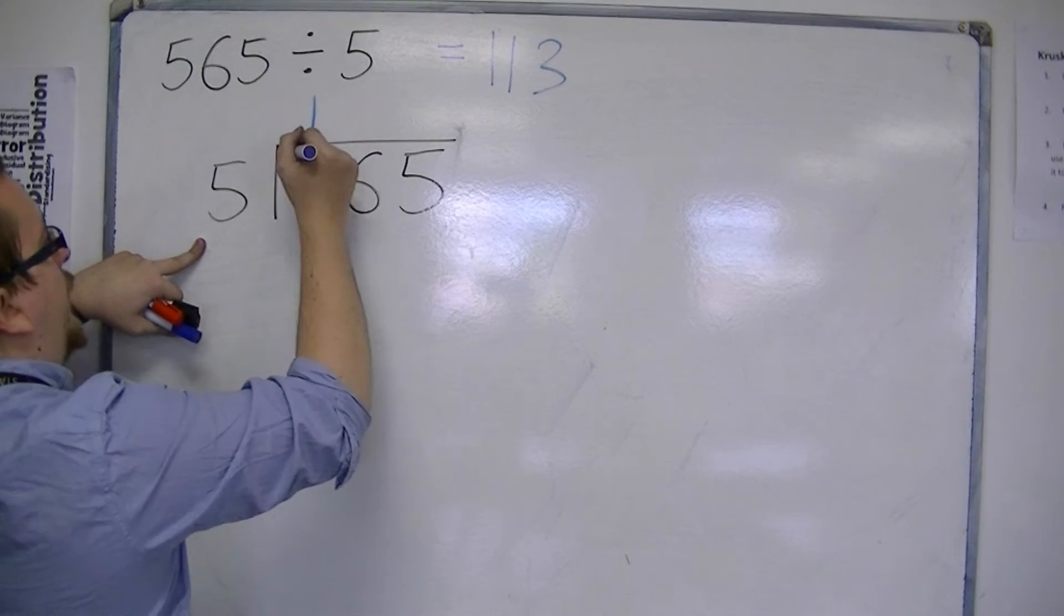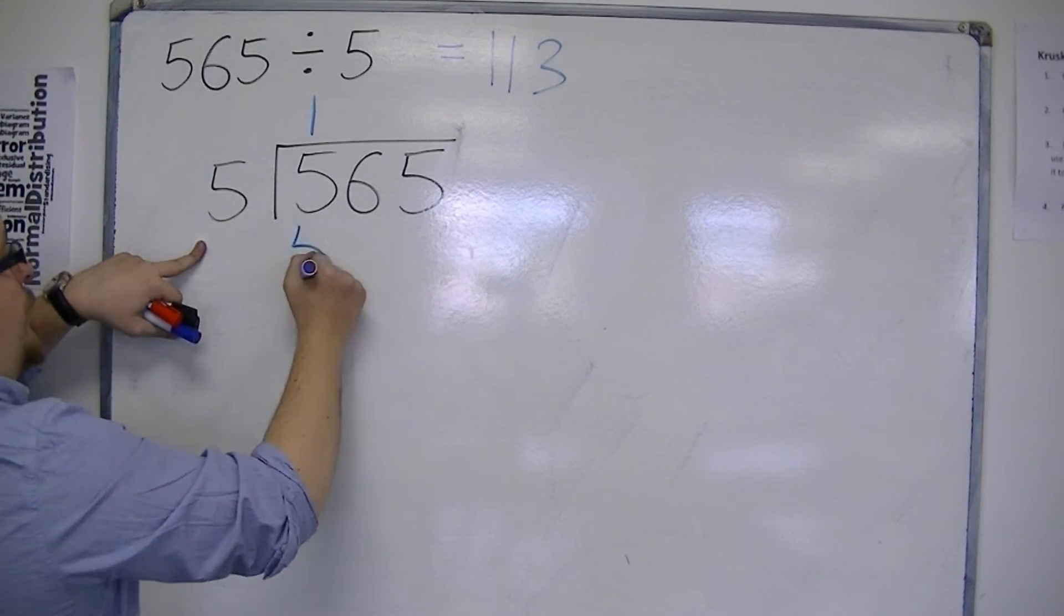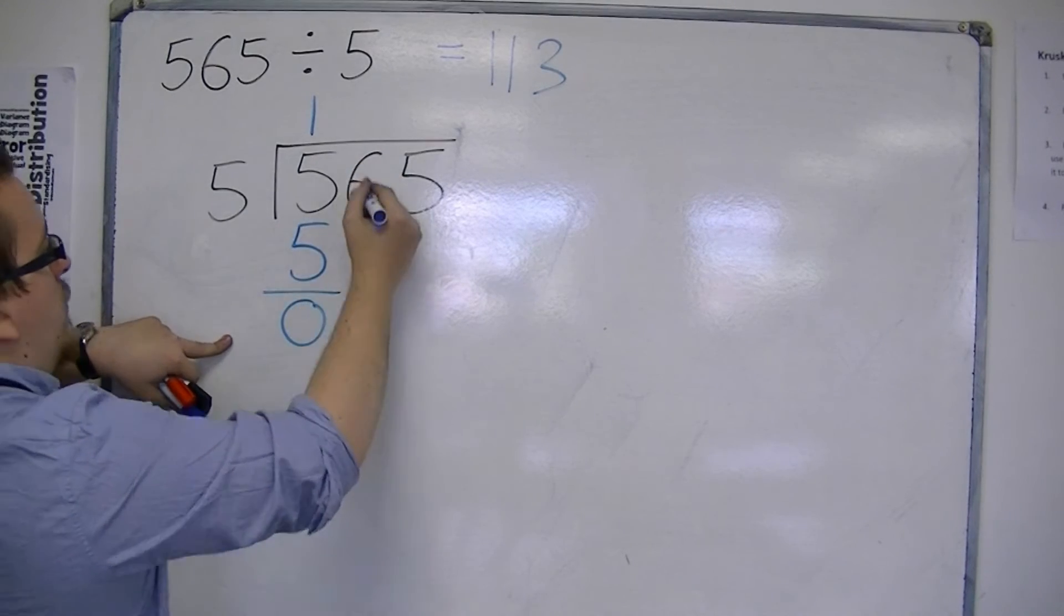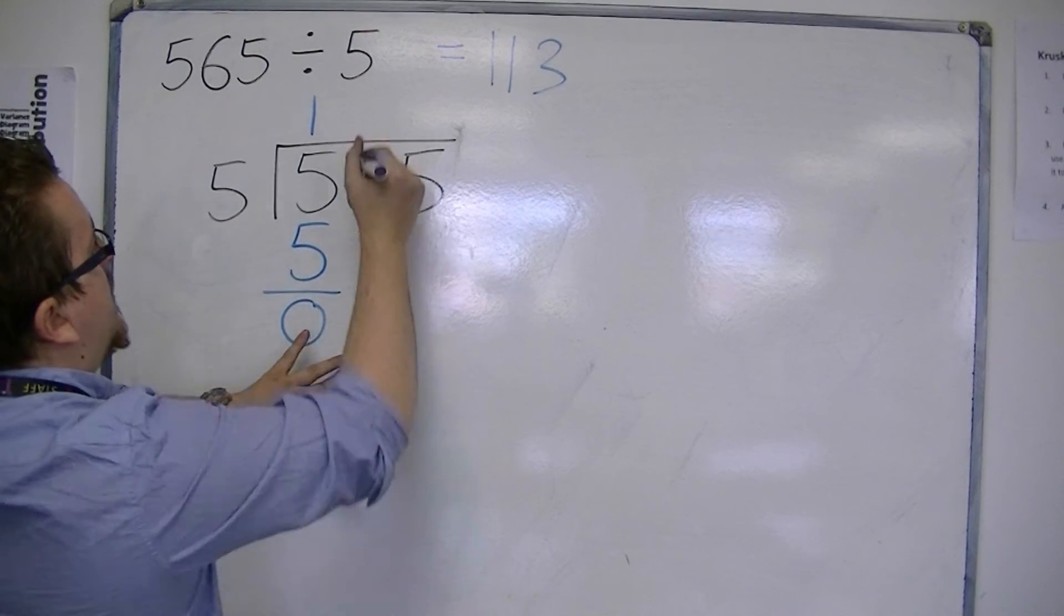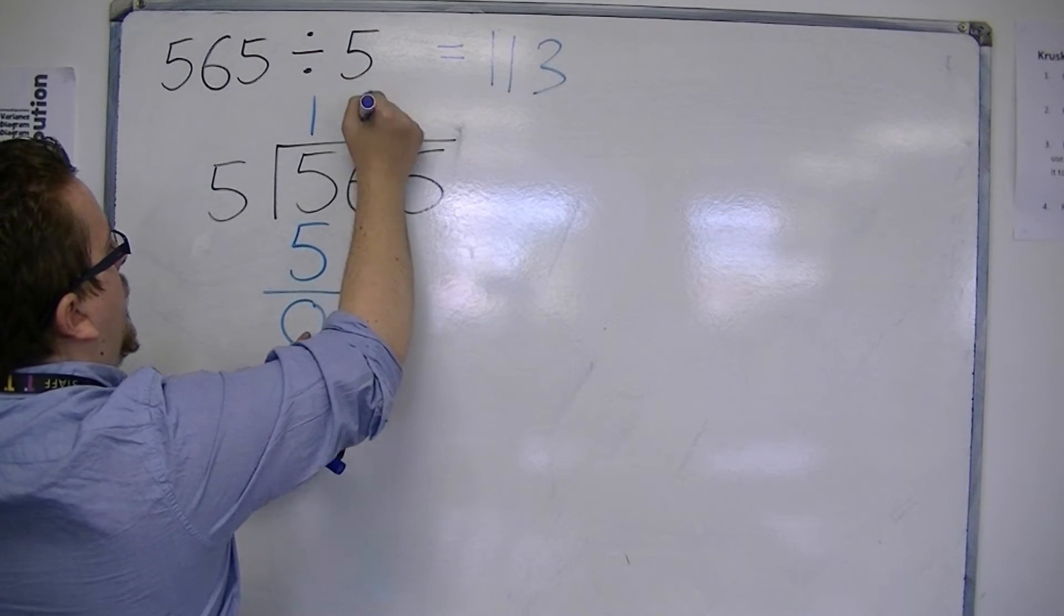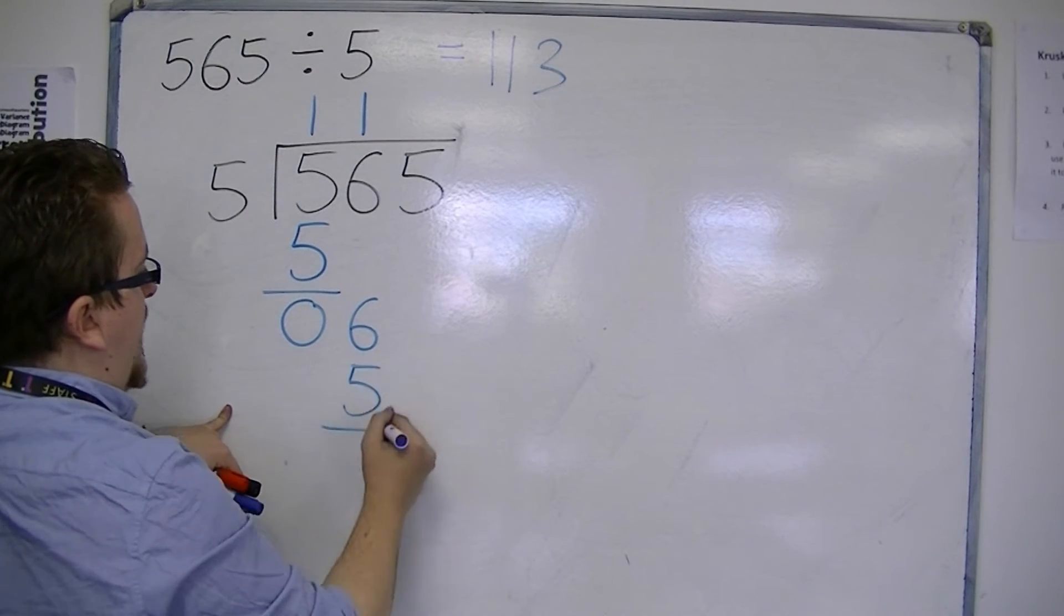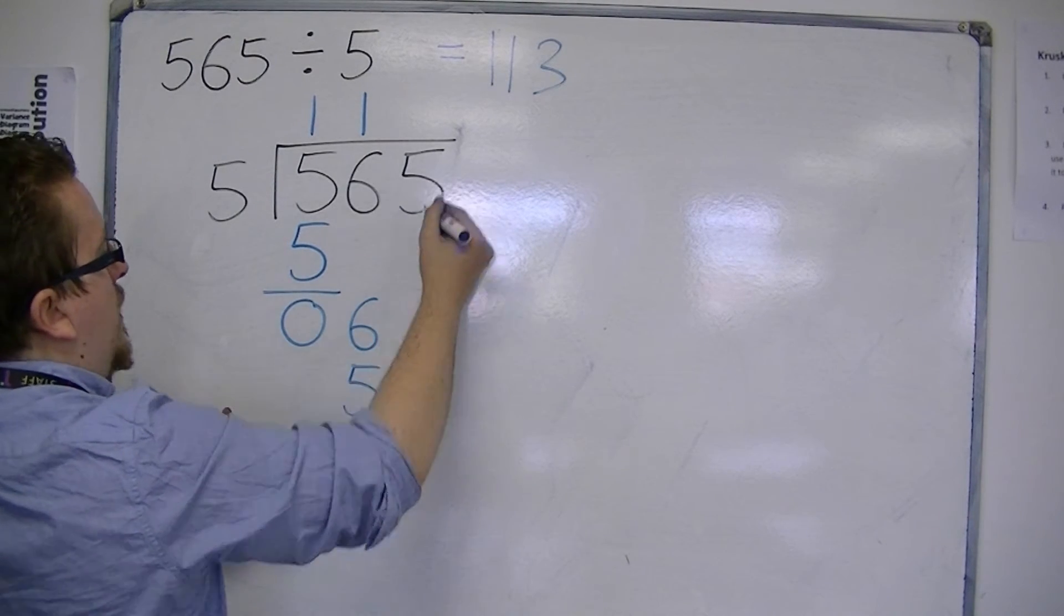Fives into five goes once. 1 times 5 is 5. 5 take away 5 is 0. Bring the 6 down. 5s into 6 goes once. 1 times 5 is 5. 6 take away 5 is 1. Bring the 5 down.